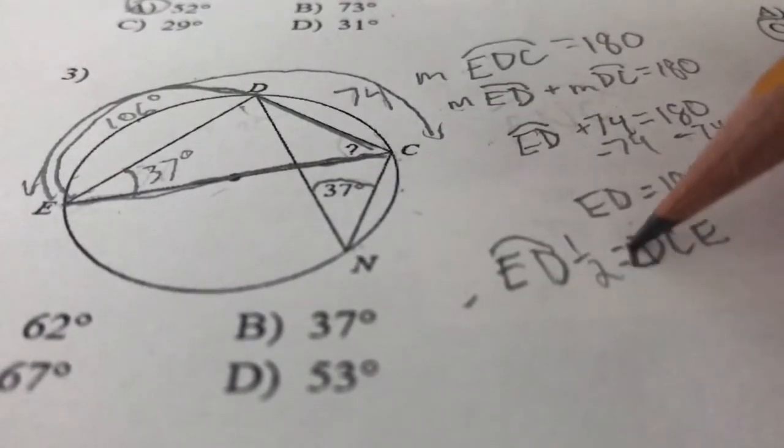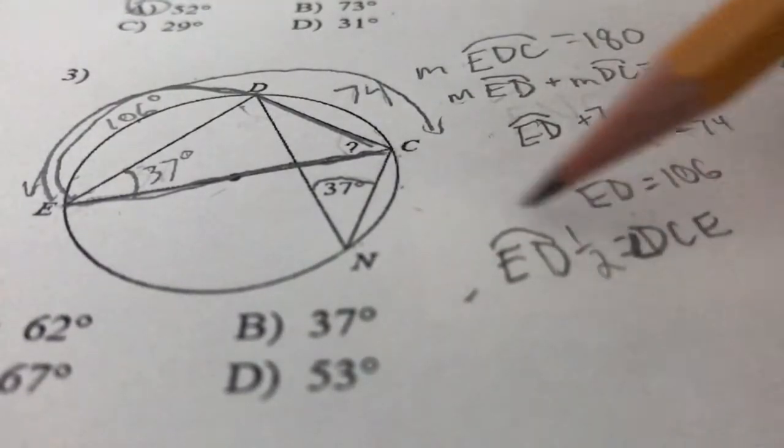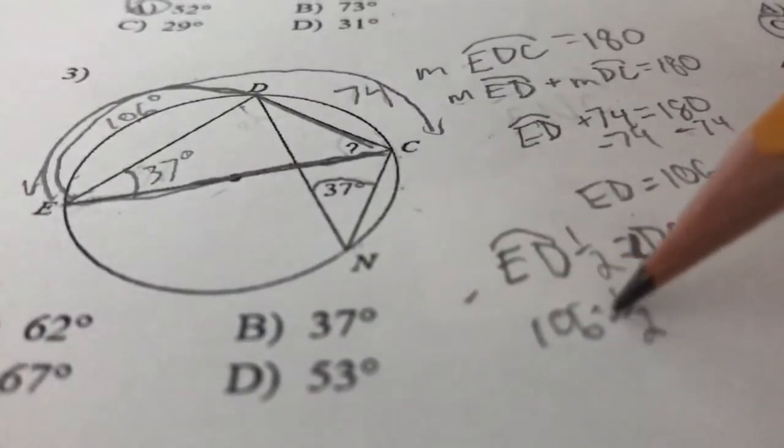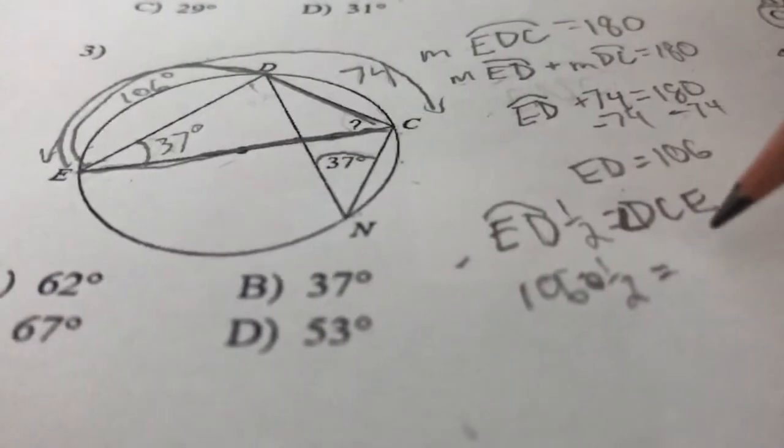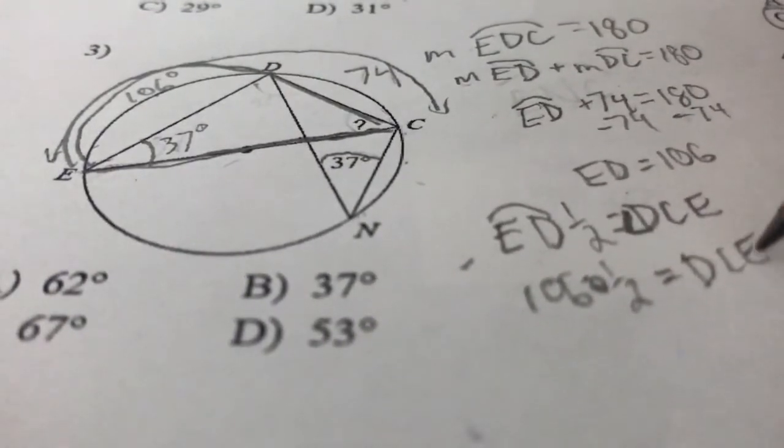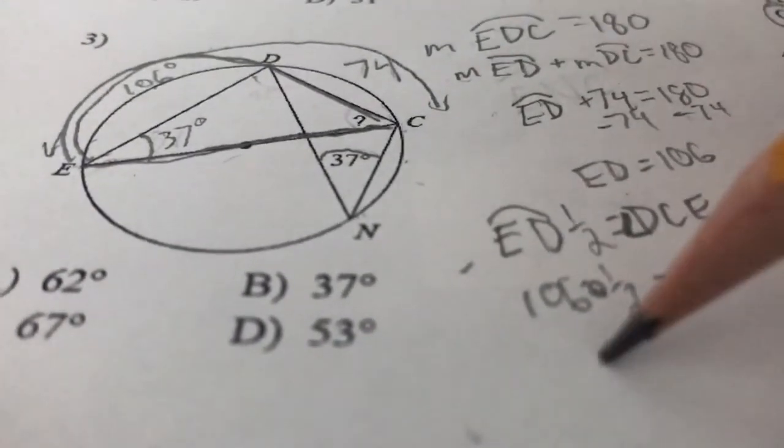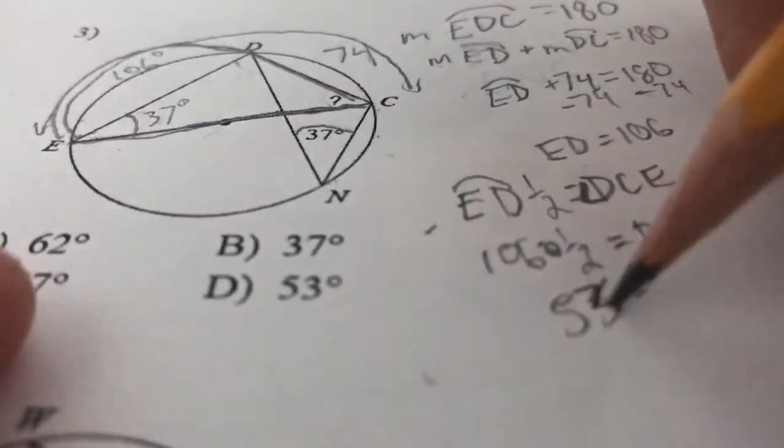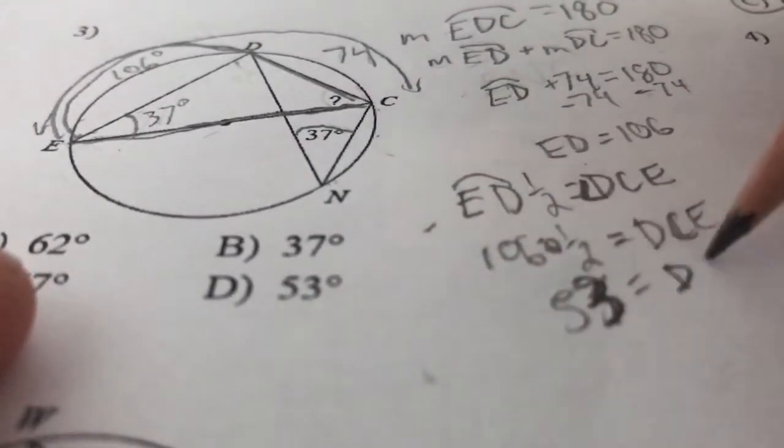So if we know that ED is 106 times 1 half is equal to DCE, we could say 53 is equal to DCE.